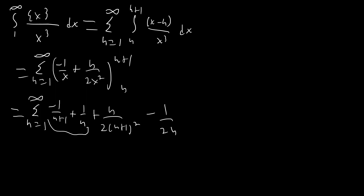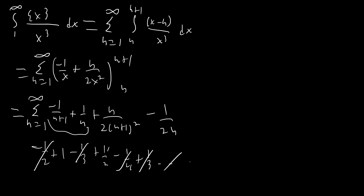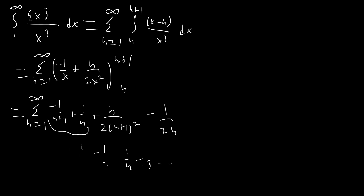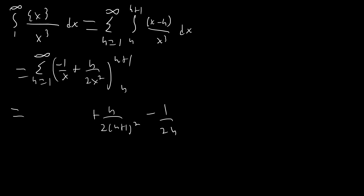Writing out the first few terms of the telescoping part: negative 1/2 plus 1, minus 1/3 plus 1/2, minus 1/4 plus 1/3, and so on — all of these cancel each other. The last term is 1 over n plus 1 in the limit as n goes to infinity, which goes to 0, so the series doesn't spiral out of control. The telescoping part evaluates to just 1.